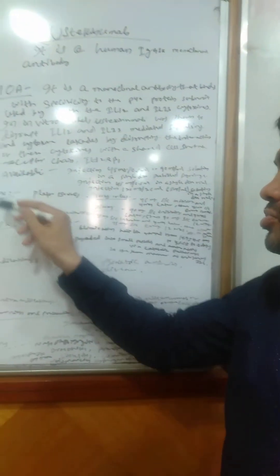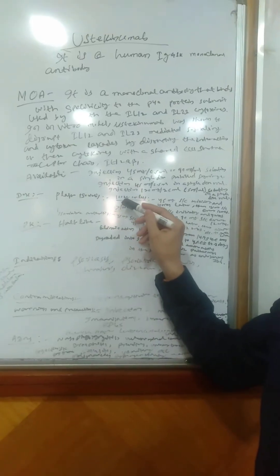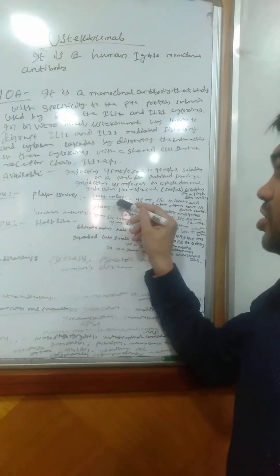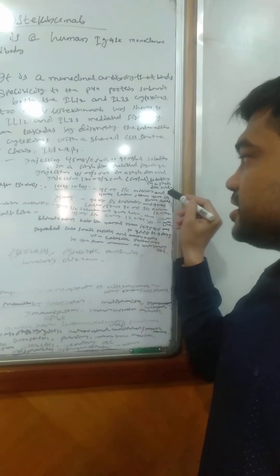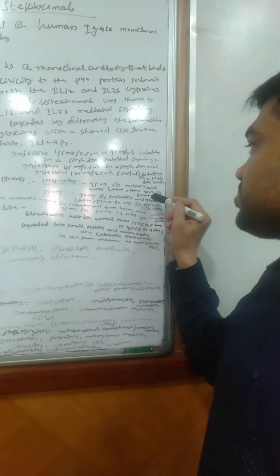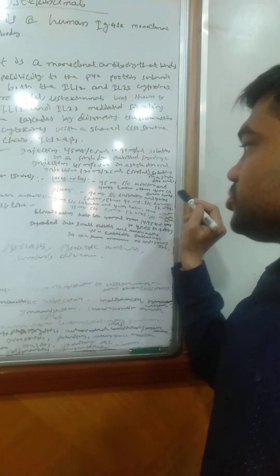If the patient is 100 kg or less, then 45 mg subcutaneous initially and 4 weeks later, then 45 mg subcutaneous every 12 weeks.